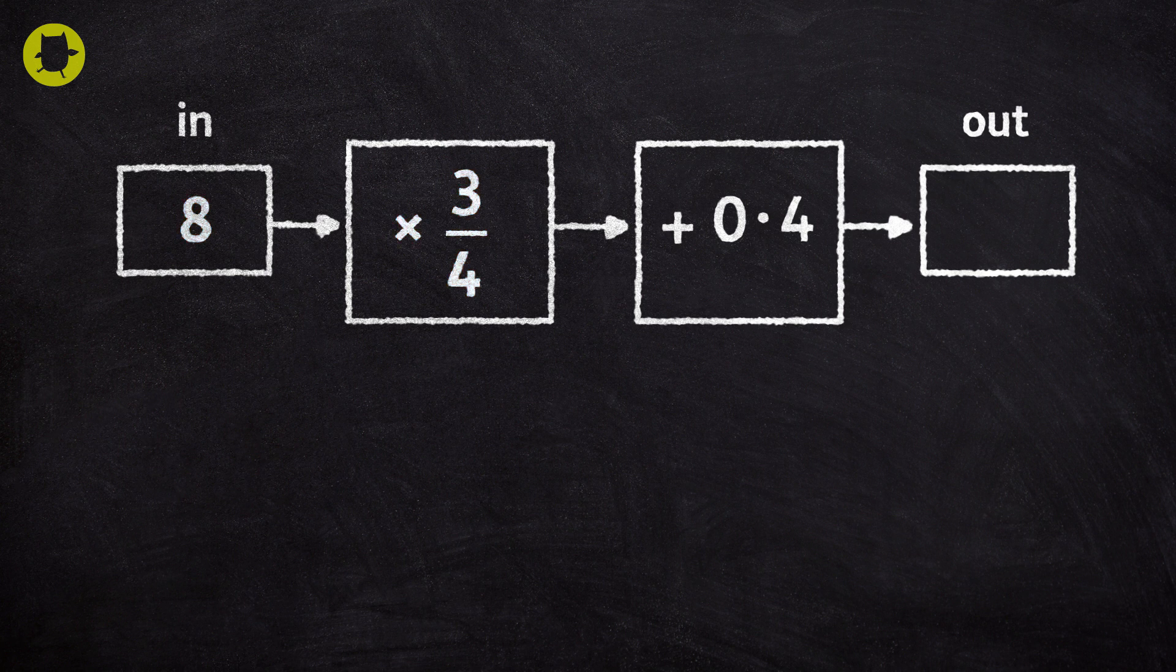To do this, we turn the whole number into a fraction. The eight becomes the numerator and we add one as the denominator.